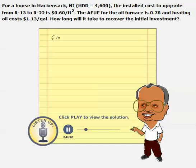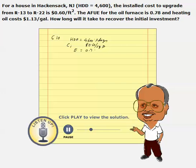We have all the data. HDD is given as 4,600. The cost of insulation, CI, is given as $0.60 per square foot. And the efficiency of the furnace is given as 78%, or 0.78.